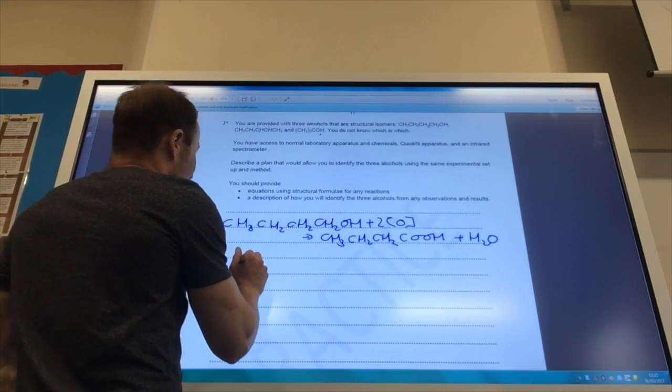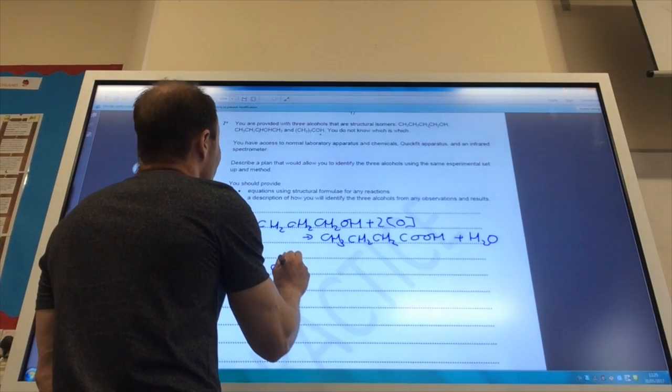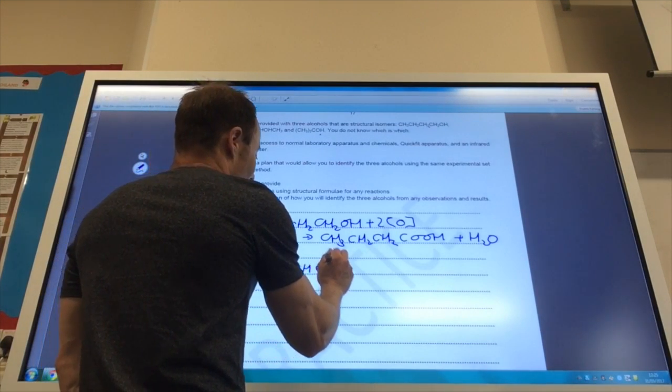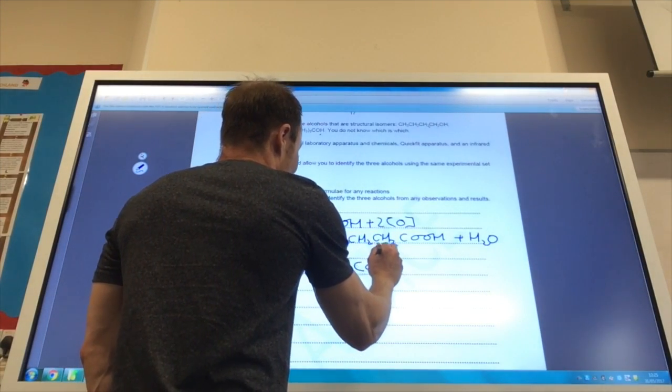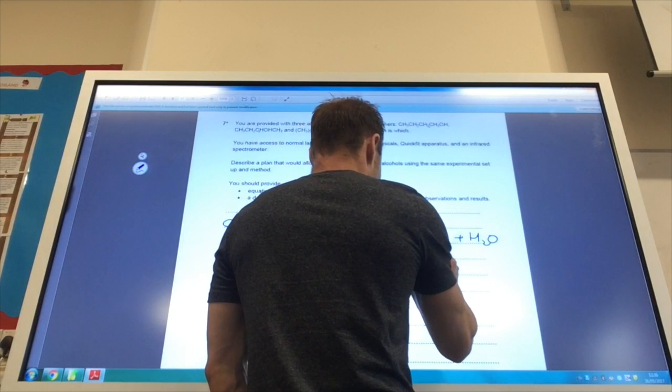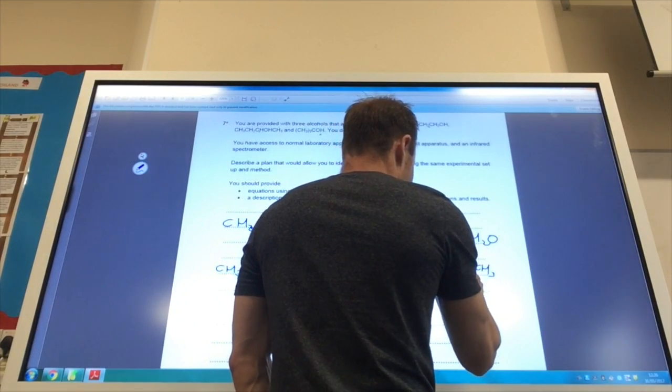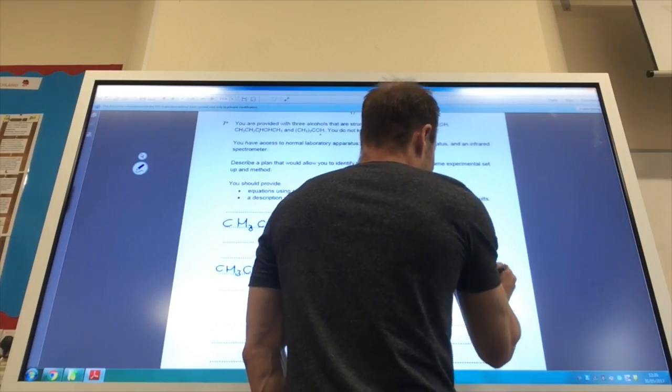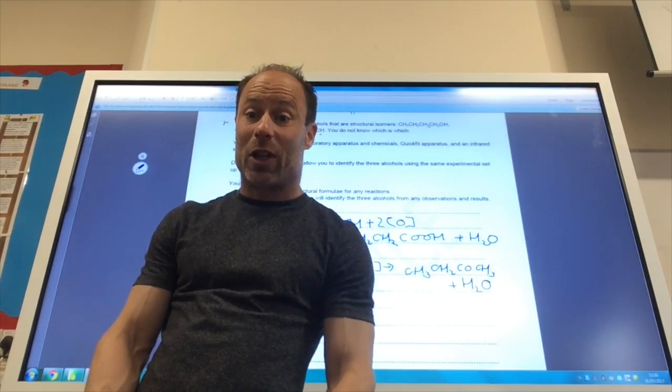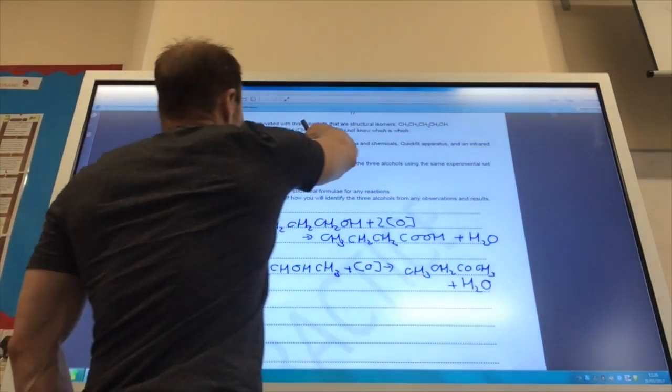For my secondary alcohol, that would obviously be oxidized to a ketone. So, I would only be adding one square bracket O to give me CH3, CH2, CO, CH3, plus water again. So, in the infrared spectrum of this one, I would see a strong C double bond O band, but no OH band at all.